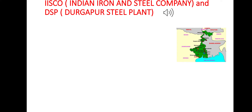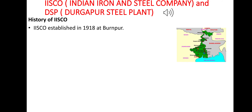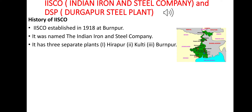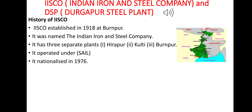Regarding the history of ISCO: it was established in 1918 at Burnpur and named the Indian Iron and Steel Company. It operated three separate plants at Hirapur, Kulti, and Burnpur, all operating under SAIL. It was nationalized in 1976.